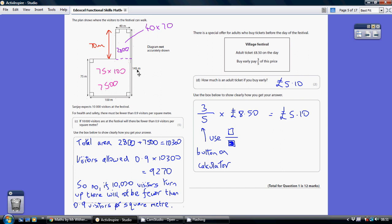Now once we know that, we can work out the area of this smaller rectangle because it's 40 times 70, which is 2,800.